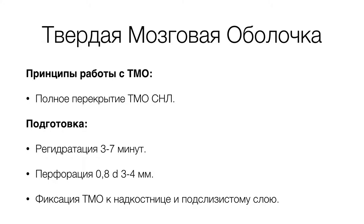Твёрдая мозговая оболочка требует подготовки во время операции — это её перфорация в сухом виде. Диаметр 0,8 мм — это, по сути, диаметр стерильной иглы шприца, применяемого для внутримышечной инъекции, обычного одноразового стерильного.